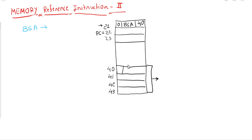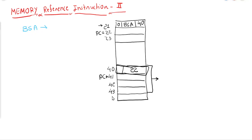How will this be executed? Whenever control transfers to the subroutine, on the first location of the subroutine we will store the return address. Our return address will be 22, because the program counter will point towards the return address. So here we will store 22. Then the program counter will point to the next location, which is the first instruction location, and execution will start. Let us assume that on location 44 the subroutine is getting over.